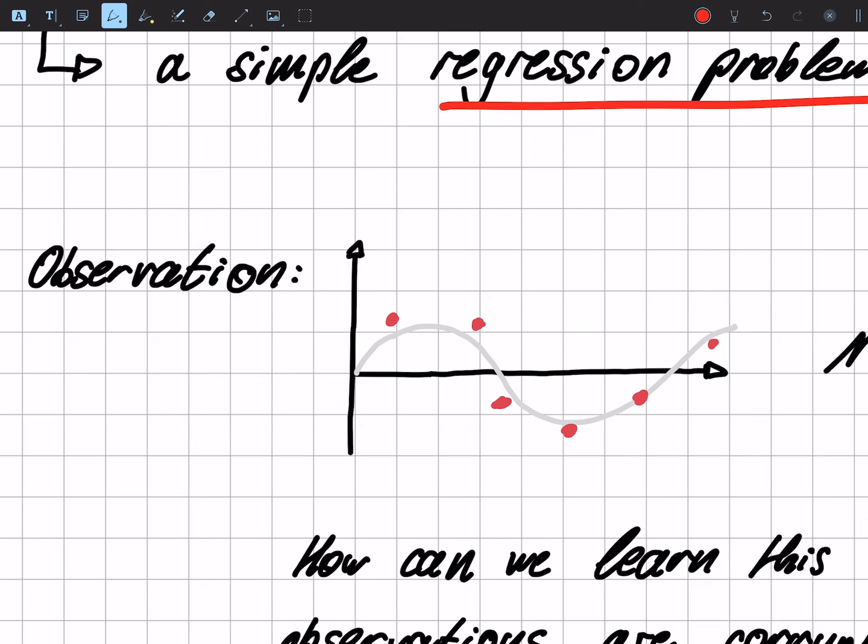Let's see we have these observations. The red dots are our observations and the gray graph is a sine curve. So if you only see the red dots, you might think that they resemble a sine curve somehow.